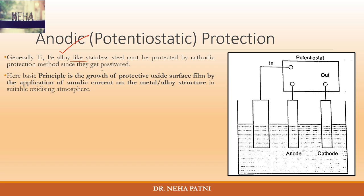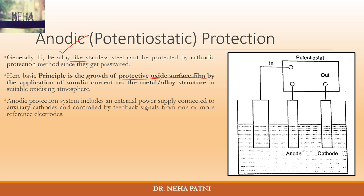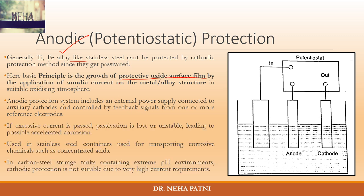So you think about another method — anodic protection. Being an anode, the principle is you just have to develop a protective oxide surface film on your existing anode. An external power supply is connected to auxiliary cathodes, and you apply that external power supply, which helps in the growth of the protective oxide surface film on the metal.